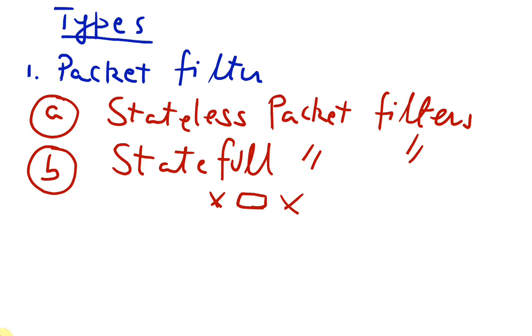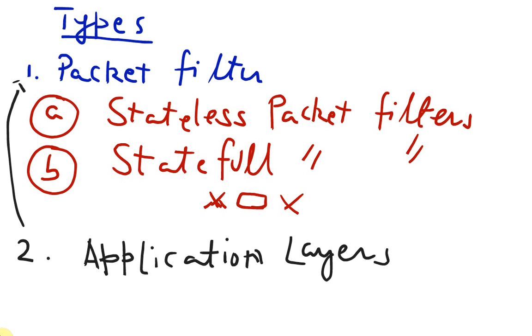Based on these three states it can decide what to do based on predefined rules. And the second type of firewalls which we have already discussed in the generations of firewalls is called the application layer firewall.